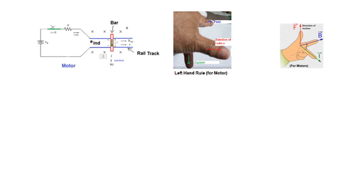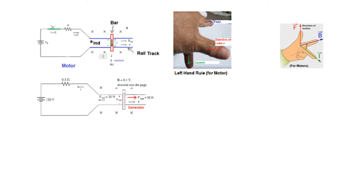For a motor we use the left hand rule. The thumb represents the force or direction of movement, the second finger represents the flux density, and the middle finger represents the current. In our case the flux lines are going into the page, the current is coming from top to bottom, and the thumb shows the direction of movement. From this we can conclude that the bar will move to the right.